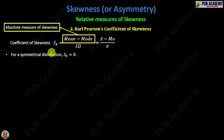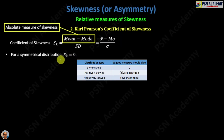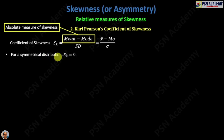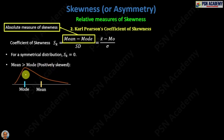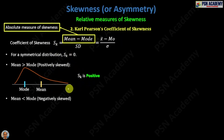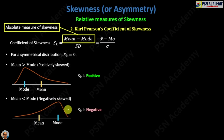For a symmetrical distribution this measure will give you zero, which meets our criteria for a good measure. For a positively skewed distribution, where mean is greater than mode, S_k will give you a positive magnitude. In case of a negatively skewed distribution, where mean is less than mode, S_k will give you a negative magnitude.